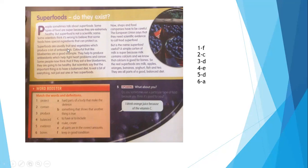Superfoods are usually fruit and vegetables. So we can say superfoods are fruit and vegetables which produce a lot of antioxidants. Colorful fruit like blueberries are a good example. They produce antioxidants which help fight heart problems and cancer.